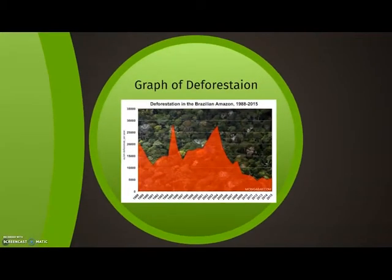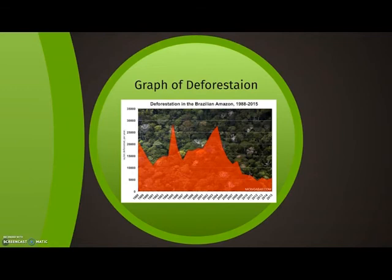This is a graph of deforestation. As you can see, there is a lot of fluctuation until 2004, where deforestation decreases until 2008. From then on it decreases again, but in the last few years deforestation, and ultimately biodiversity loss, has increased.